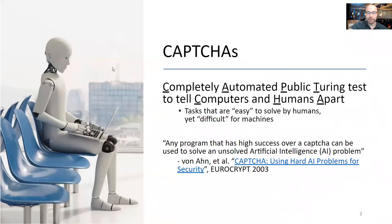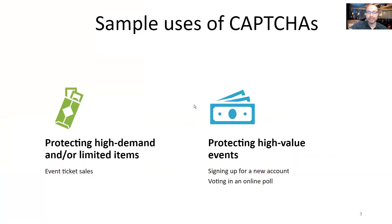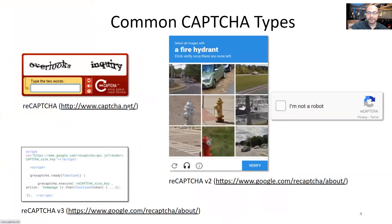Completely automated public Turing tests to tell computers and humans apart, more well-known as CAPTCHAs, were first introduced in 2003. CAPTCHAs are tasks based on AI problems that are difficult for machines to solve but easy for humans. Mainly used on the web, CAPTCHAs are used to protect high-demanding items such as event ticket sales, or high-value events such as signing up for an email. There are different types of CAPTCHAs varying from distorted text or object recognition to invisible ones embedded in multiple web pages.